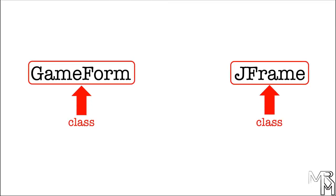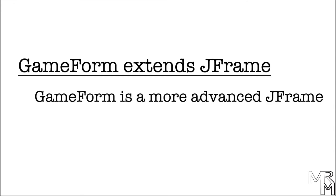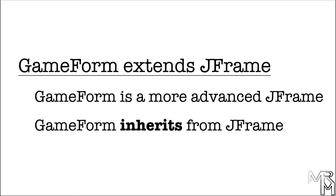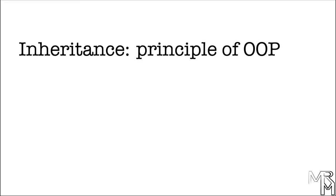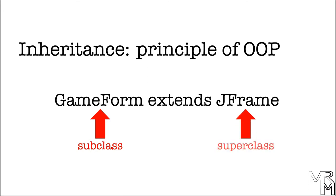The bottom line is, JFrame is a class, GameForm is a class as well, and classes in Java can extend other classes. In our program, we have the GameForm class extend the JFrame class. What does this mean? It means that GameForm is a somewhat more advanced version of JFrame. It also means that GameForm inherits from JFrame. Inheritance is one of the cornerstone principles of object-oriented programming. Simply put, classes can extend or inherit from other classes. The class that inherits from another class is called subclass, while the class that's been inherited from is called superclass.